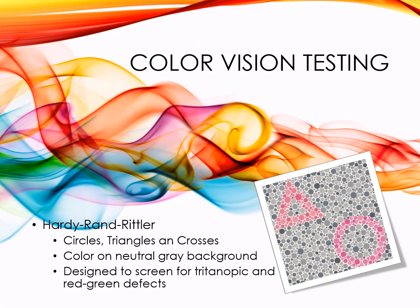The Hardy Rand Rittler color test is designed to screen for blue defects (tritanopic defects) and red-green defects. It has a neutral gray background with colored circles, triangles, and crosses, which the patient is asked to identify.